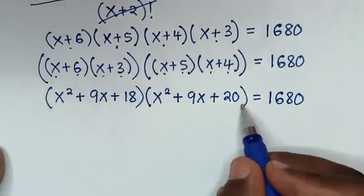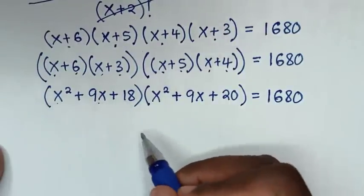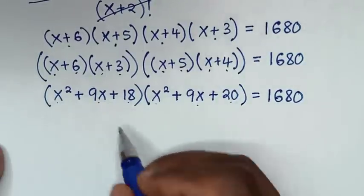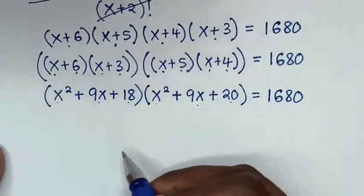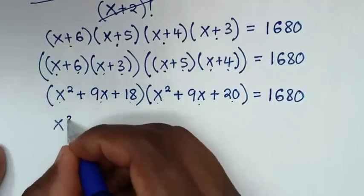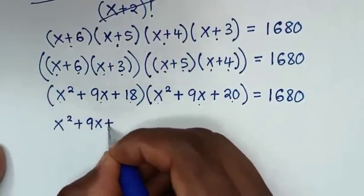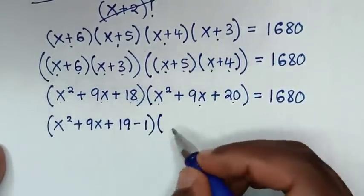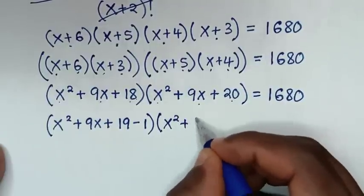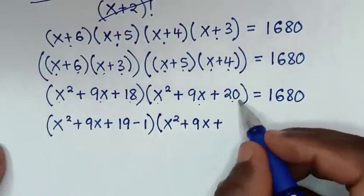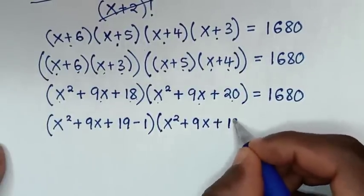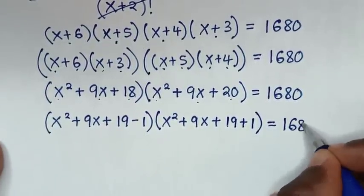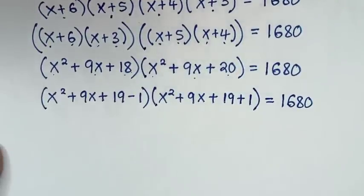We notice that x²+9x is common in both quadratic expressions. We rewrite: x²+9x+18 = (x²+9x+19) - 1, and x²+9x+20 = (x²+9x+19) + 1. So the equation becomes [(x²+9x+19) - 1][(x²+9x+19) + 1] = 1680.